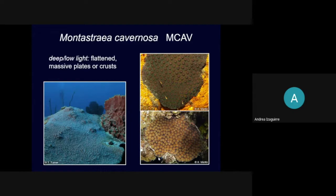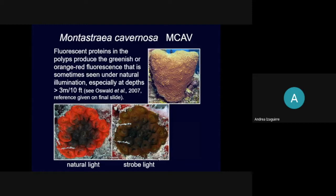Our Porites astreoides (PAST) is our last coral for today. It can grow in many different shapes — mounds, plates, encrusting — and in many different colors, even within the same colony. A good way to identify PAST is that it will almost always have the polyps extended out: all of the little tentacles will be out, making the coral look very fuzzy. It also creates very small lumps — comparing to other lumpy corals, PAST will have a lot of small bumps. Out in the water, the fuzzy look is your main indicator. You might have to get closer to the coral to get a better look and see all the fuzz.